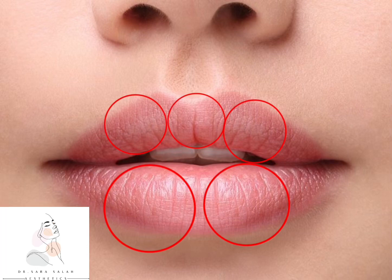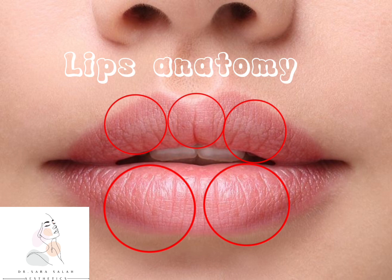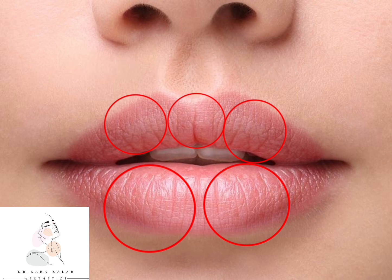Hi, I'm Dr. Sarah Salah. In today's video, we'll explain the lip anatomy. We will notice that every lip has tubercles: the upper lip has three and the lower lip has two.